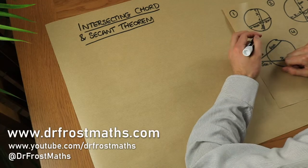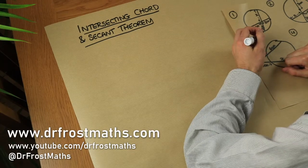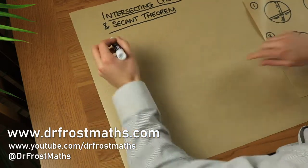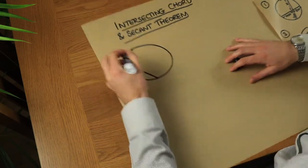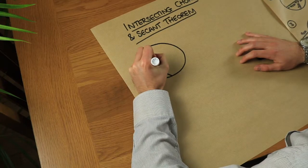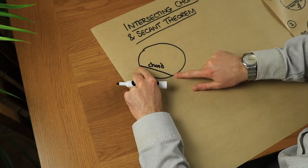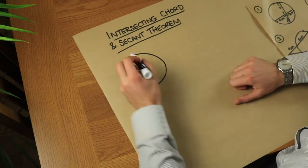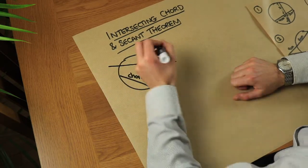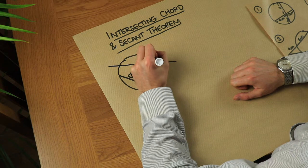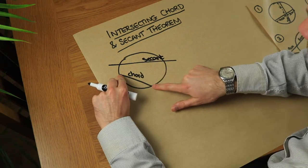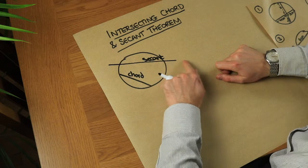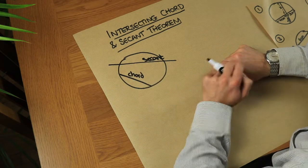Hello and welcome to this video on the intersecting chord and intersecting secant theorem. Just to remind you of the parts of a circle, the chord of a circle is a line segment that connects two points on the circumference, and a secant is a line which cuts the circle and extends to infinity both sides. So the chord stops at the two points on the circumference, whereas a secant cuts the circle and continues going.